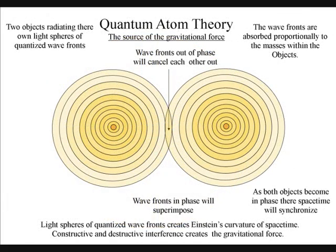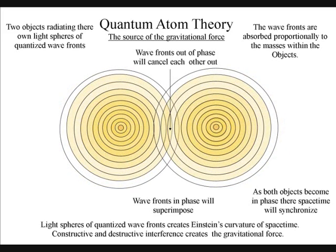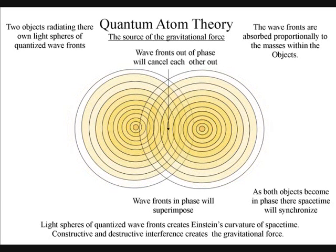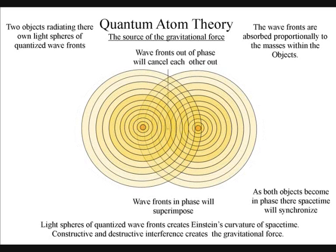When the wave-fronts of two spheres come in contact, we will have destructive interference, and the wave-fronts out of phase will cancel each other out. There will also be constructive interference between the wave-fronts that are in phase, and they will superimpose.